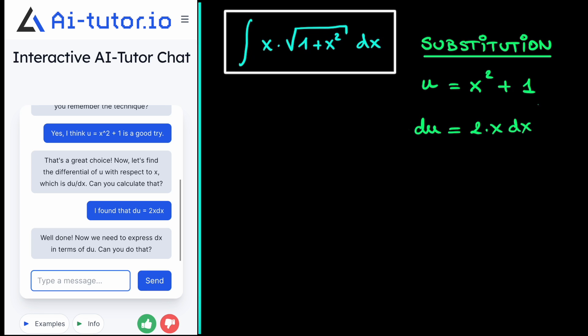And that's indeed correct, because we need to rewrite this dx as a function of du. But that is simply just rewriting this equation that we found. And thus, we find that dx is equal to 1 over 2x multiplied by du.